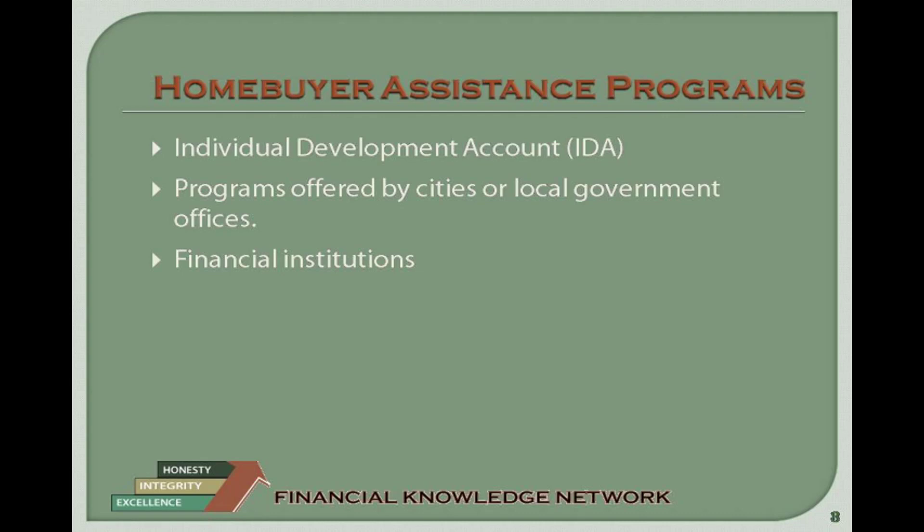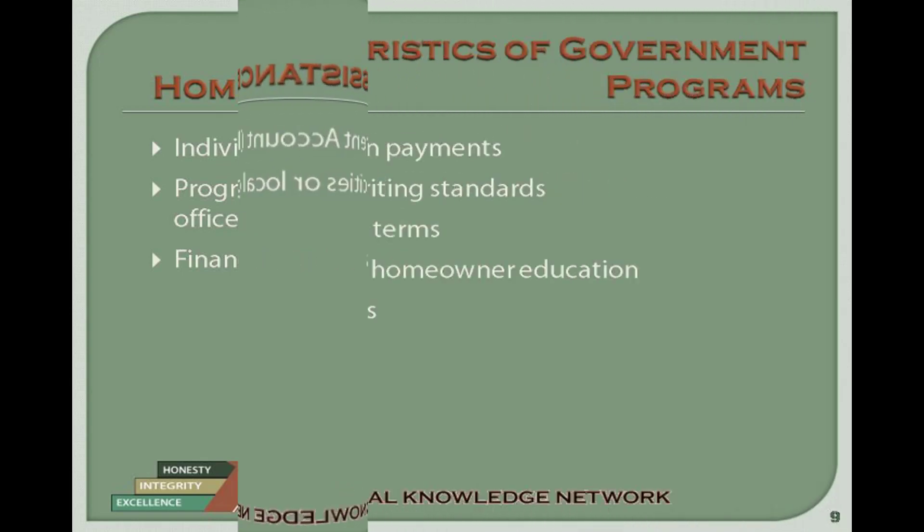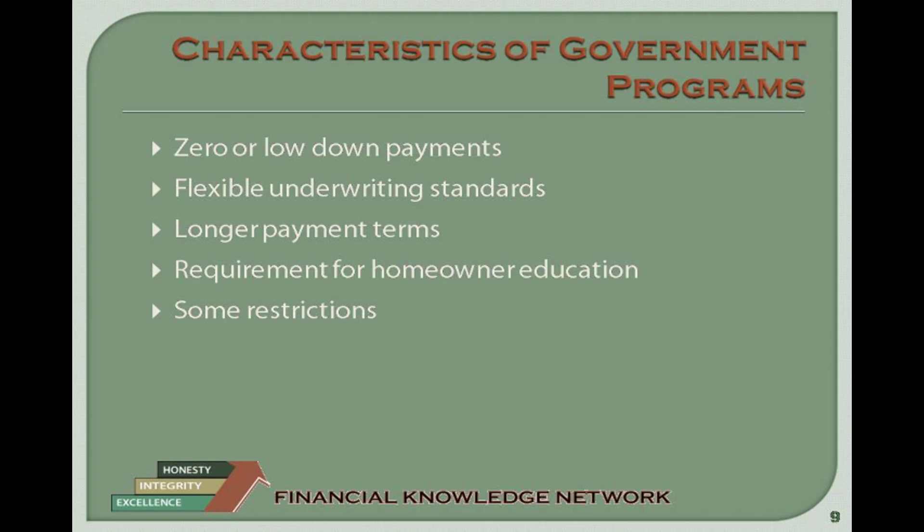Federal Housing Administration or FHA insured loans: The 203B is the most common FHA loan, featuring a low down payment, flexible qualifying guidelines, limited lender fees, and maximum loan amounts. Department of Veterans Administration or VA insured loans: Features of VA loans include you must be an eligible veteran, no down payment requirements, competitive and negotiable fixed interest rates, limitations on closing costs, and longer payment terms.